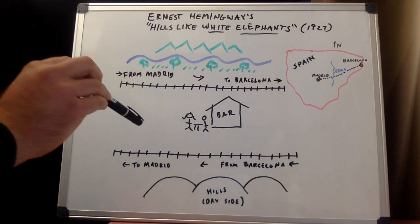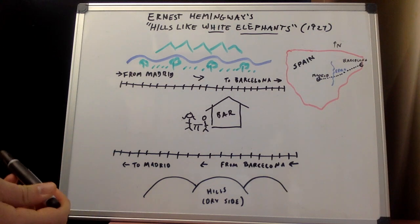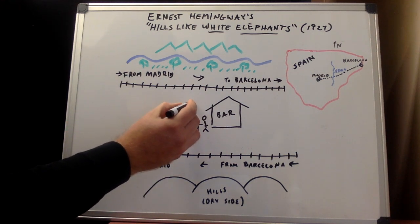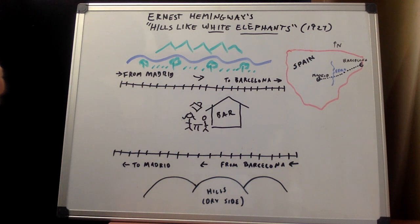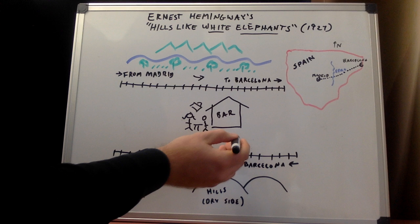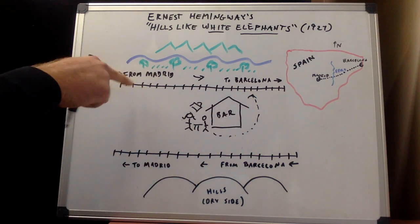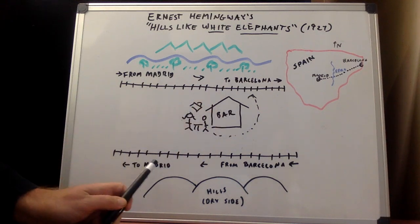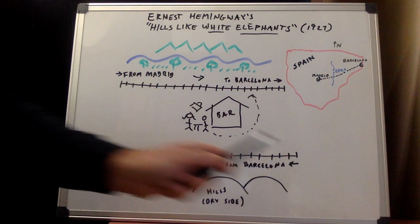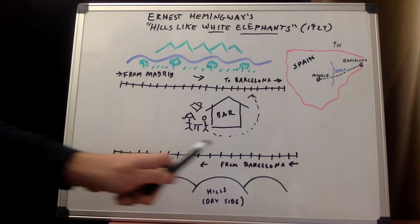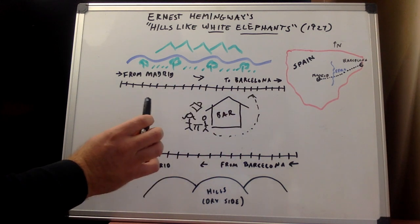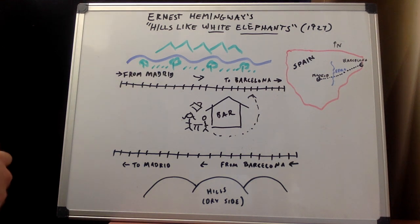Hemingway's sparse style prevents us from knowing with certainty whether they go through with it. There's one small line toward the end: a decision has been made. Their bags are against the wall of the station, and Hemingway says the man picks them up and carries them over to the other side. I interpret this as them deciding against the abortion — he takes the bags over so they can take the train back to Barcelona. But Hemingway doesn't really tell us which direction the trains are going, so the tracks could be reversed. That might be your interpretation. There's a lot of evidence throughout the story that they decide to go through with it, and you might want to argue that.